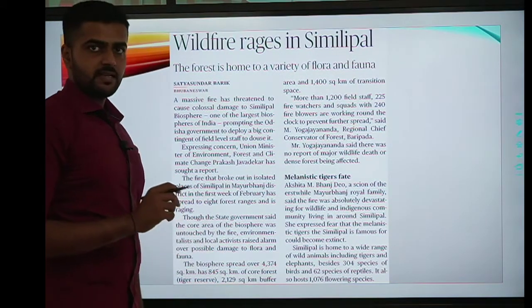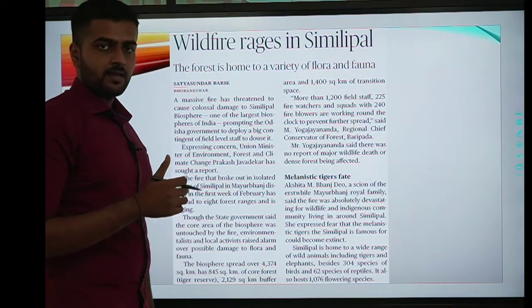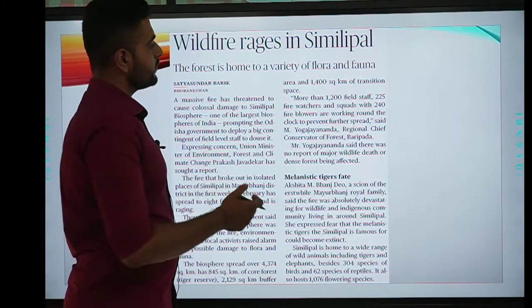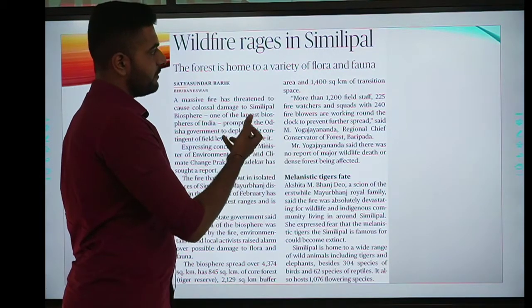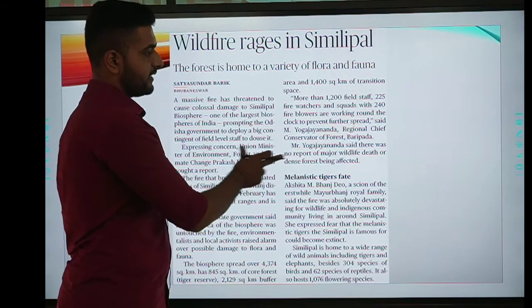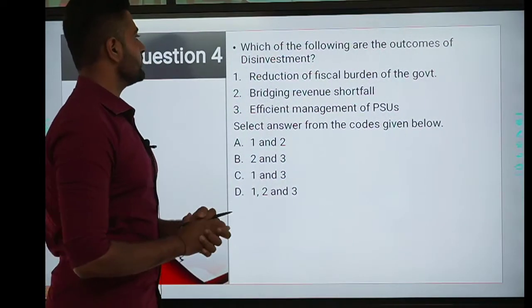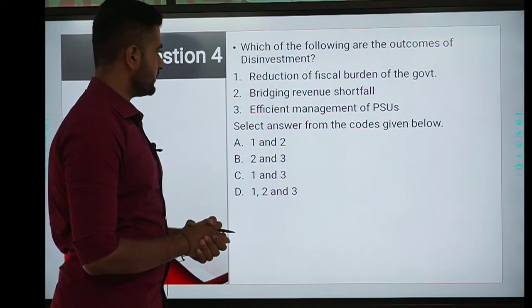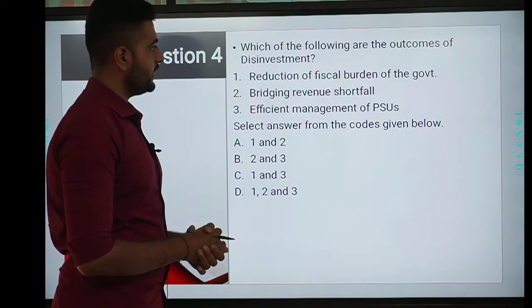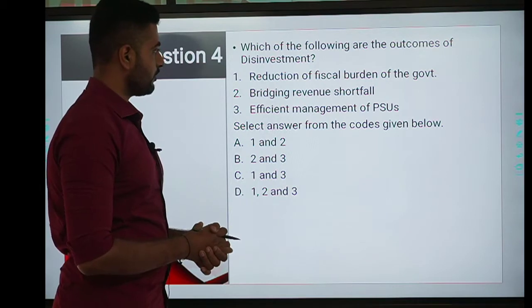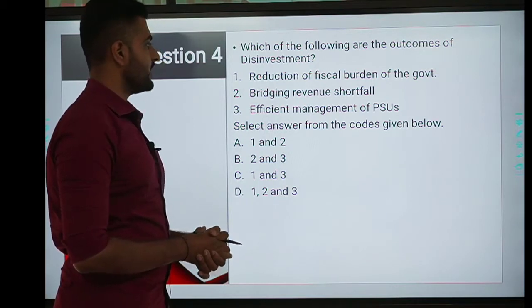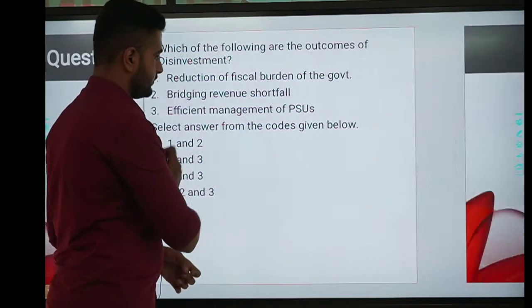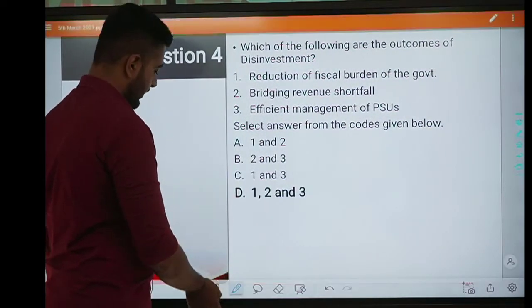Forest fires is a big issue in India because we have efforts to increase forest cover, and on the international level this topic is getting a lot of news coverage. Fourth question: which of the following are the outcomes of disinvestment? First is reduction of fiscal burden of the government. Second is bridging revenue shortfall. Third is efficient management of PSUs. The correct answer is D, 1, 2 and 3.